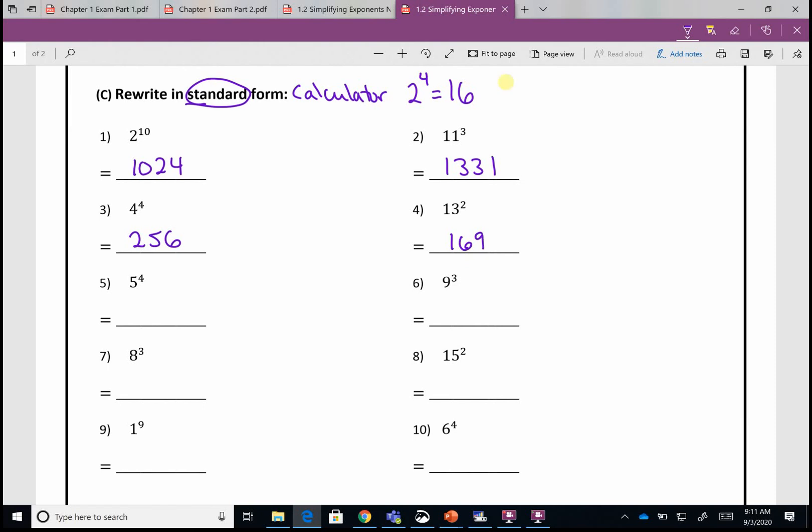Five to the fourth power is 625, nine to the third power is 729, eight to the third power is 512, 15 to the second power is 225, one to the ninth power is one, six to the fourth power is 1296.